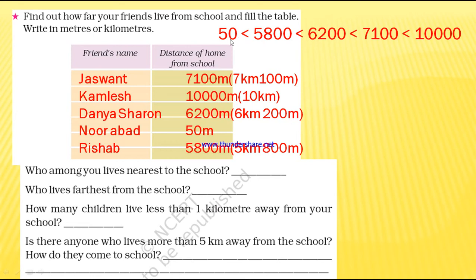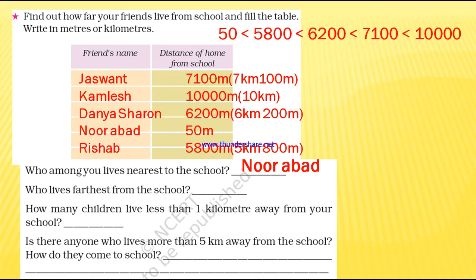So which one is the smallest? 50. Who among you lives nearest to the school — meaning very close to the school with the least distance? Noorabad, because his distance is just 50 meters. The next question: who lives farthest from the school, meaning the longest distance? They are asking about the greatest value. The nearest is Noorabad at 50 meters.